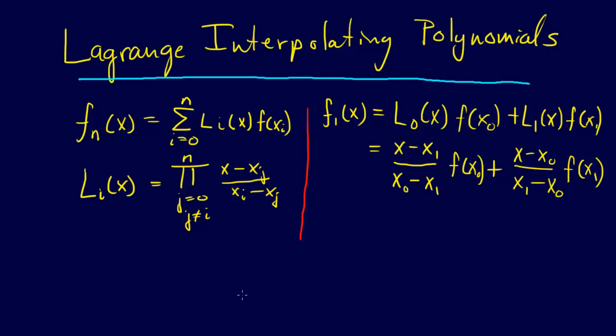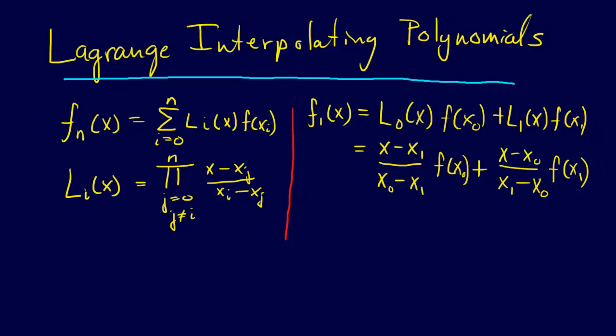We can start to get a little bit of intuition behind how this works by looking at what happens when we put in one extreme. Let's say we let x equal x1. If x equals x1, then I would put x1 in here, so that would be x1 minus x1, which would go to 0.